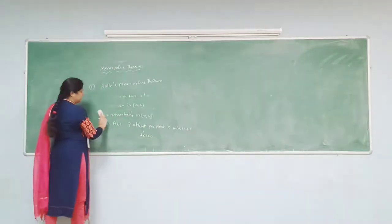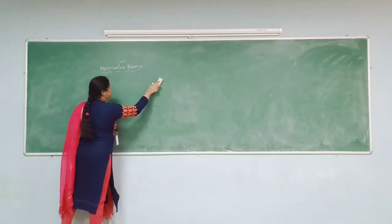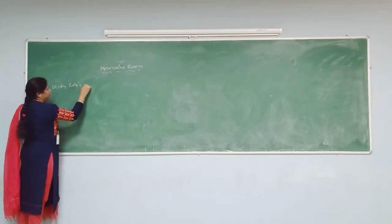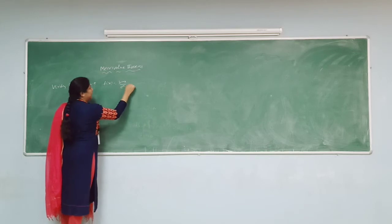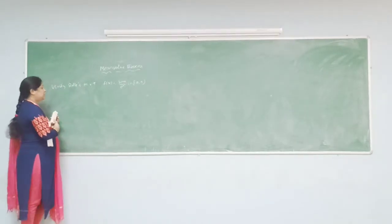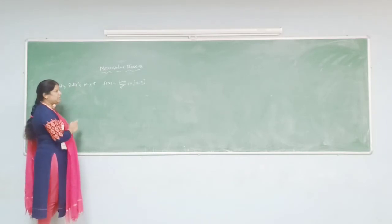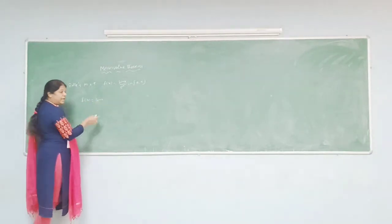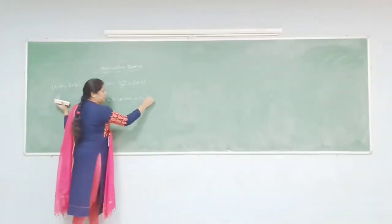Now take one example. Verify Rolle's mean value theorem for the function f(x) = sin(x) / e^x in the closed interval [0, π]. So we have the statement of Rolle's mean value theorem. Here f(x) = sin(x), and it is a continuous function in the closed interval [0, π].